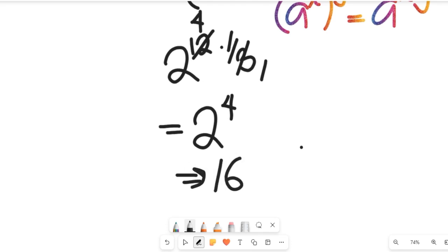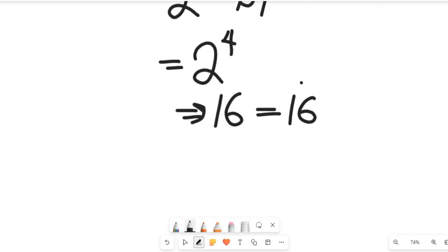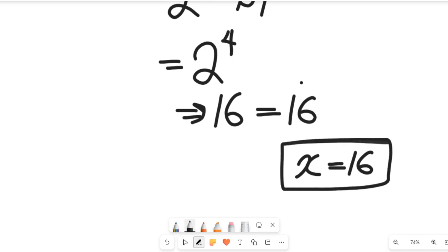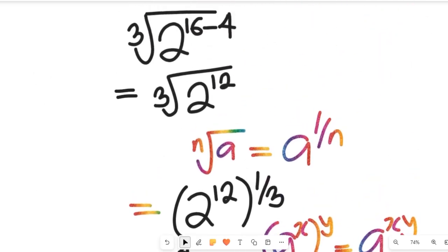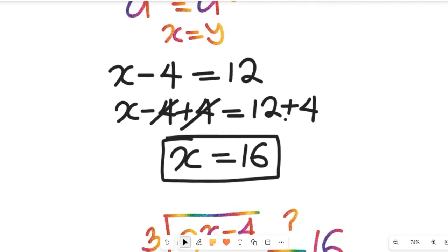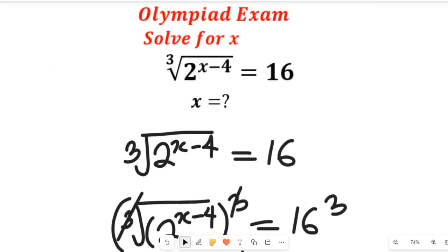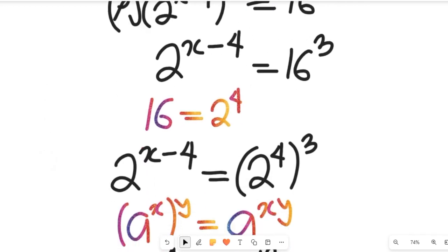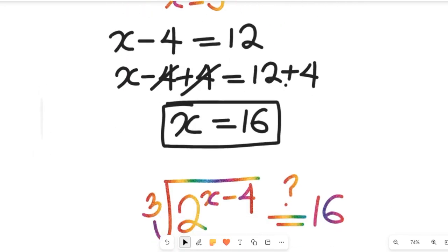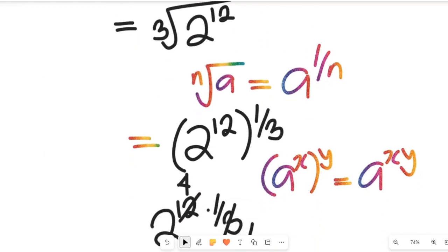16 on the left-hand side equals 16 on the right-hand side. That tells us that x equals 16 is the solution that truly satisfies the exponential equation given to us. Don't forget to give this video a thumbs up and subscribe to my channel for more simplified olympiad mathematics solutions. Thanks so much for watching, bye bye for now.